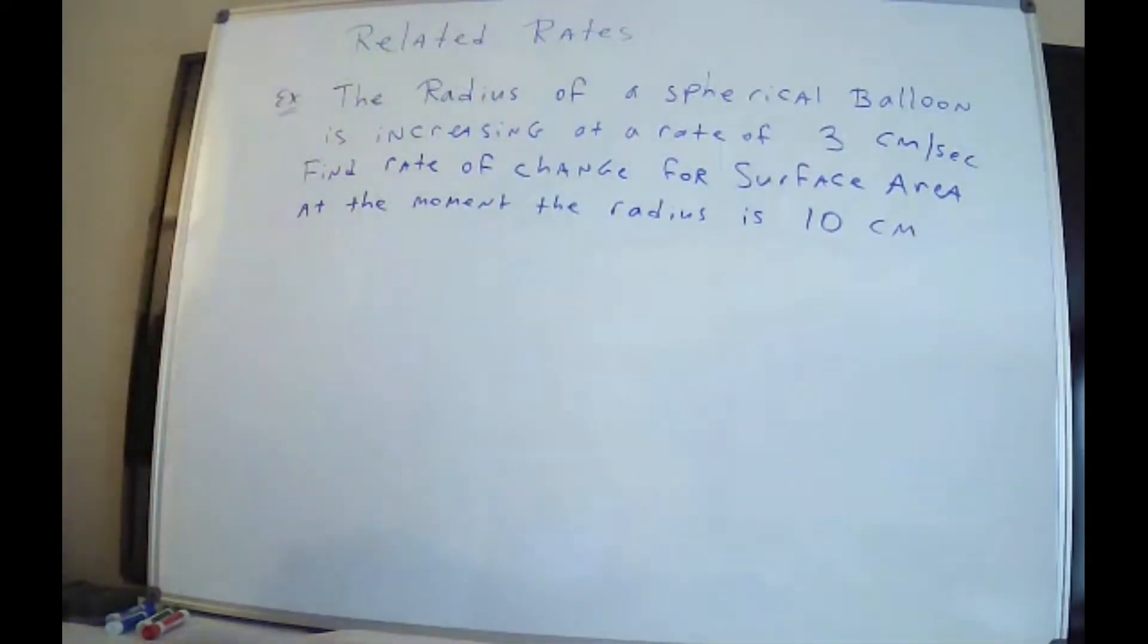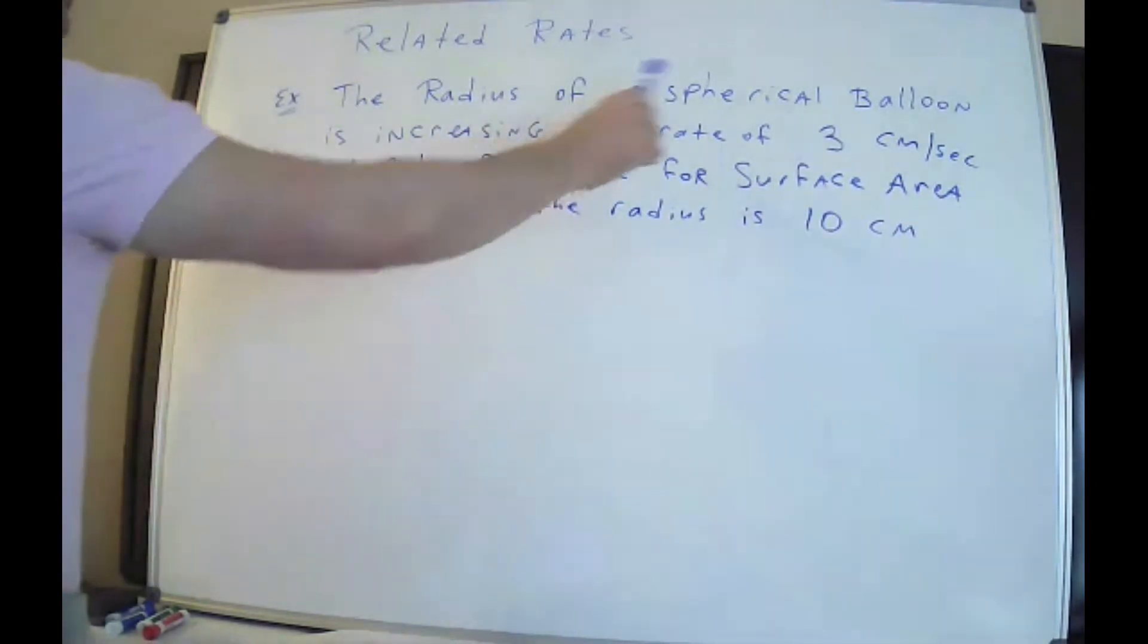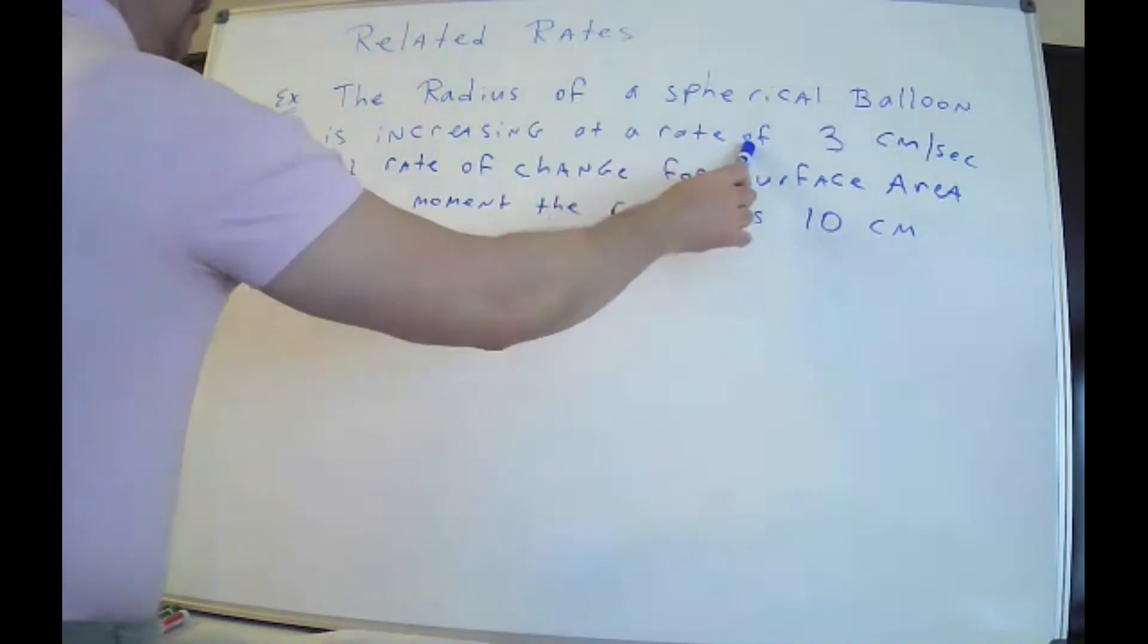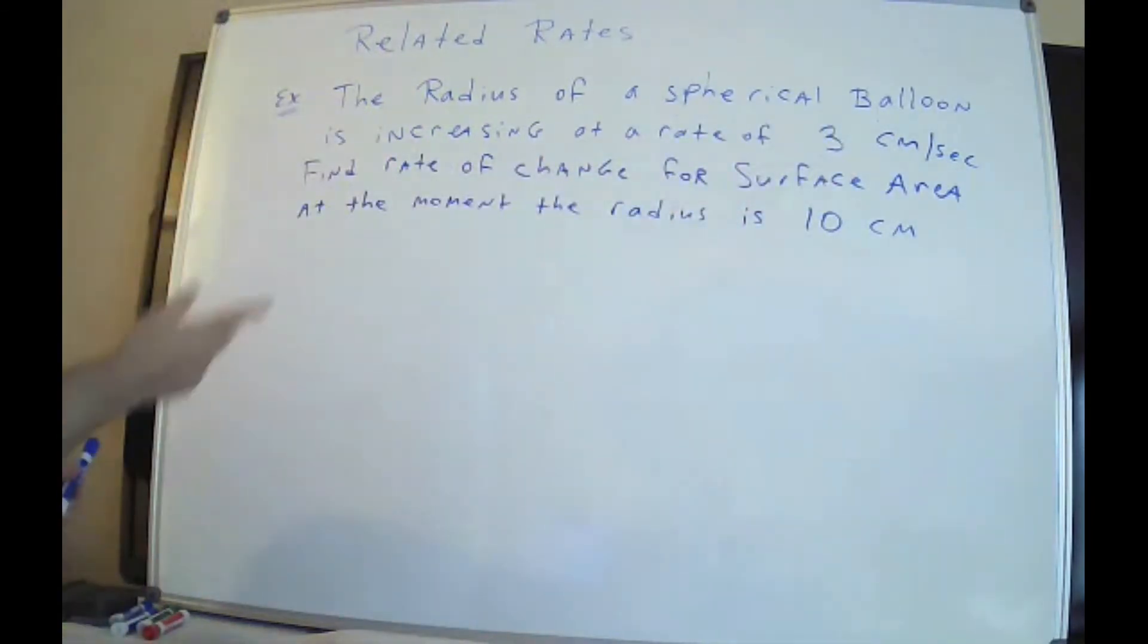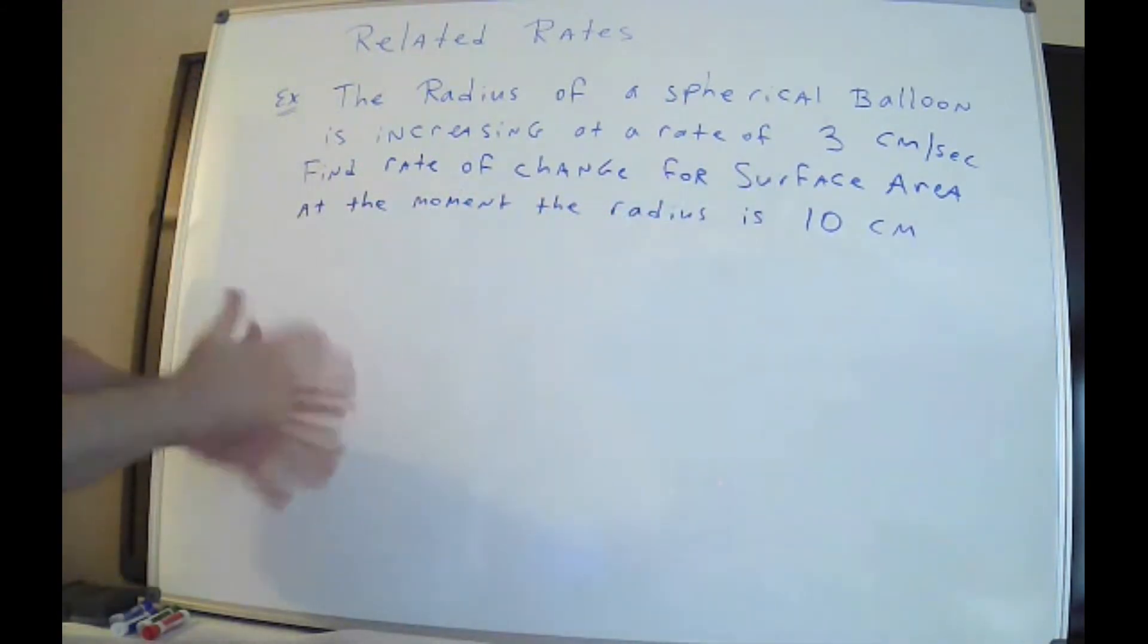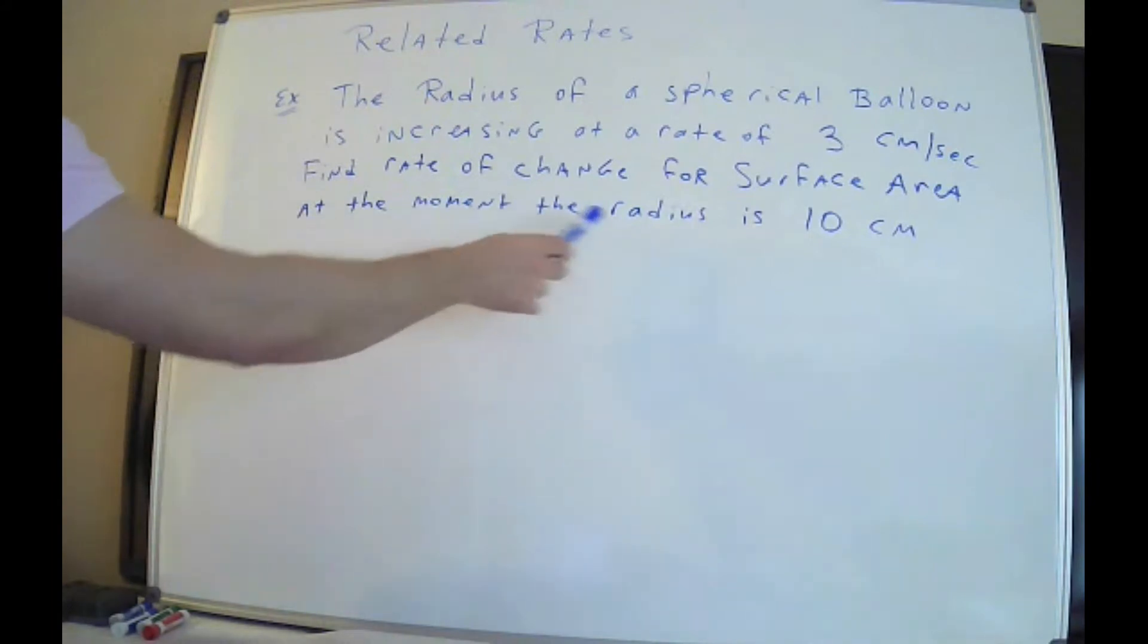So related rates, the fun word problems. I have a blast with these. The radius of a spherical balloon is increasing at a rate of 3 centimeters per second. You want to find the rate of change for the surface area, which is the outside part of the balloon, at the exact moment in time that the radius is 10 centimeters.